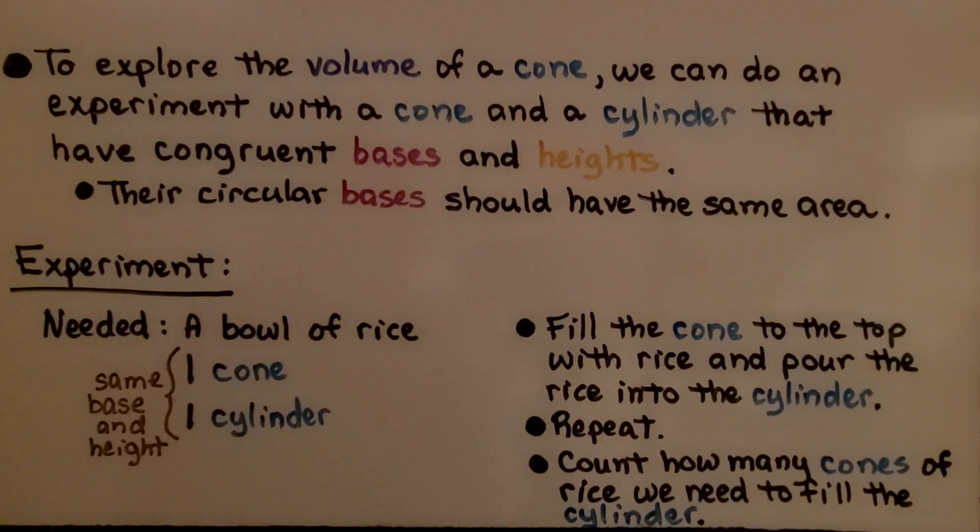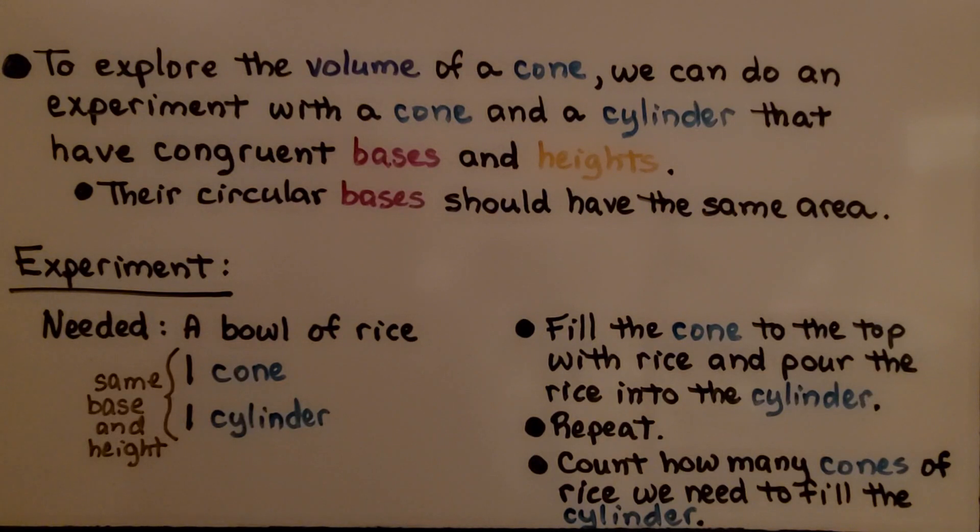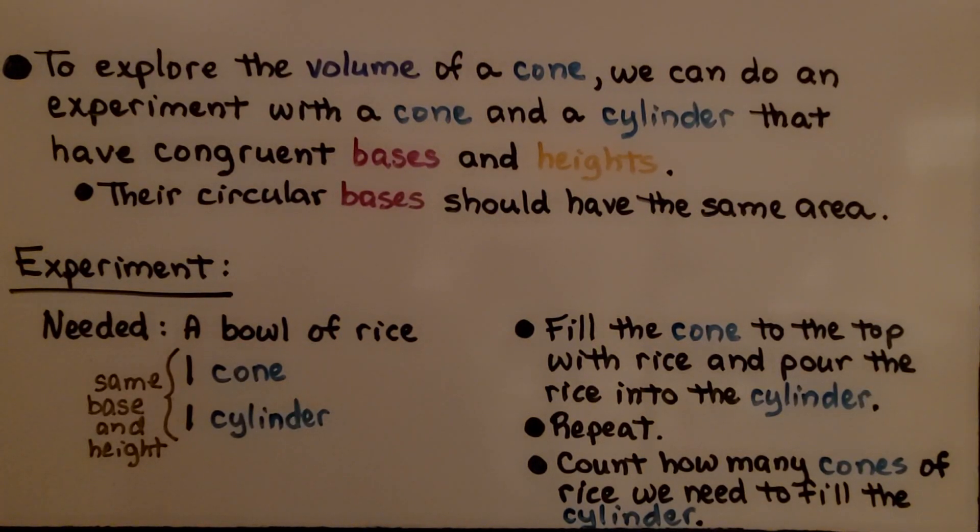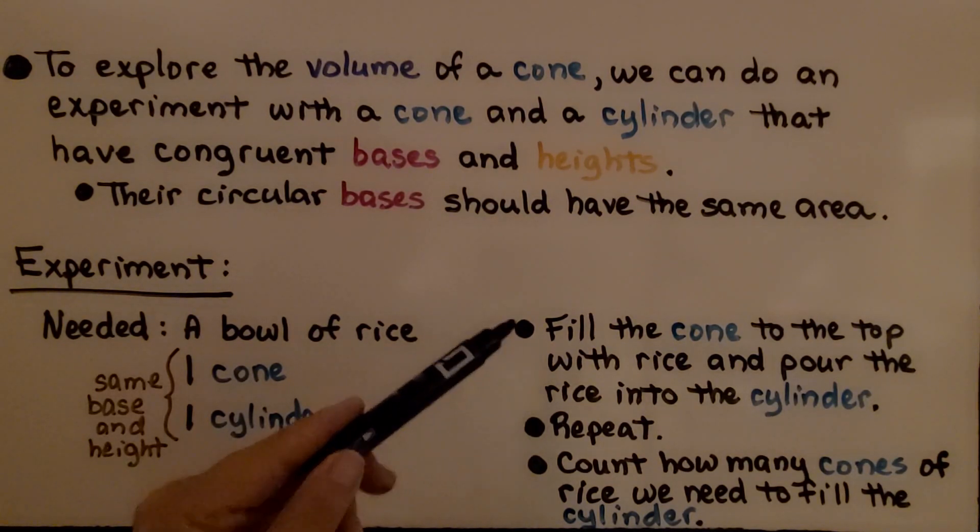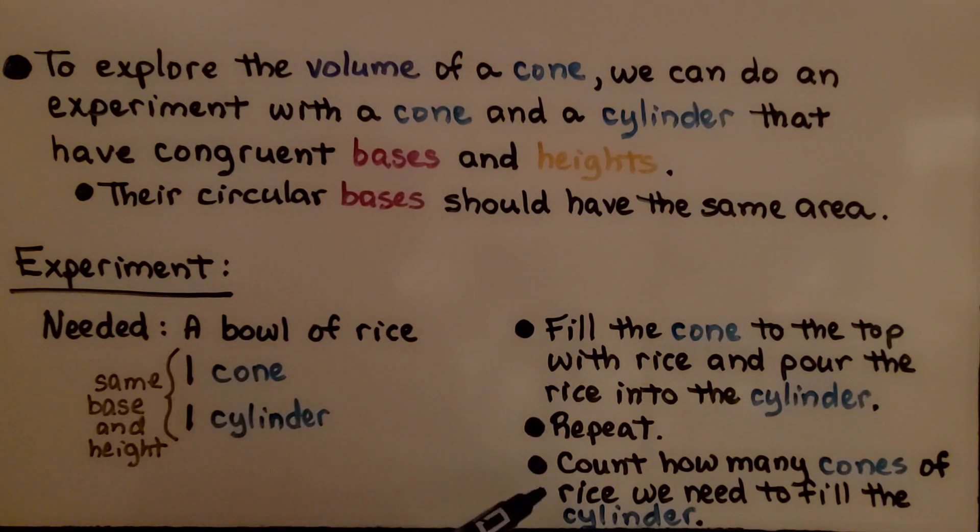To explore the volume of a cone, we can do an experiment with a cone and cylinder that have congruent bases and heights. What's needed is a bowl of rice and one cone and one cylinder that have the same base and height. We fill the cone to the top with rice and pour it into the cylinder, then repeat and count how many cones of rice we need to fill the cylinder.